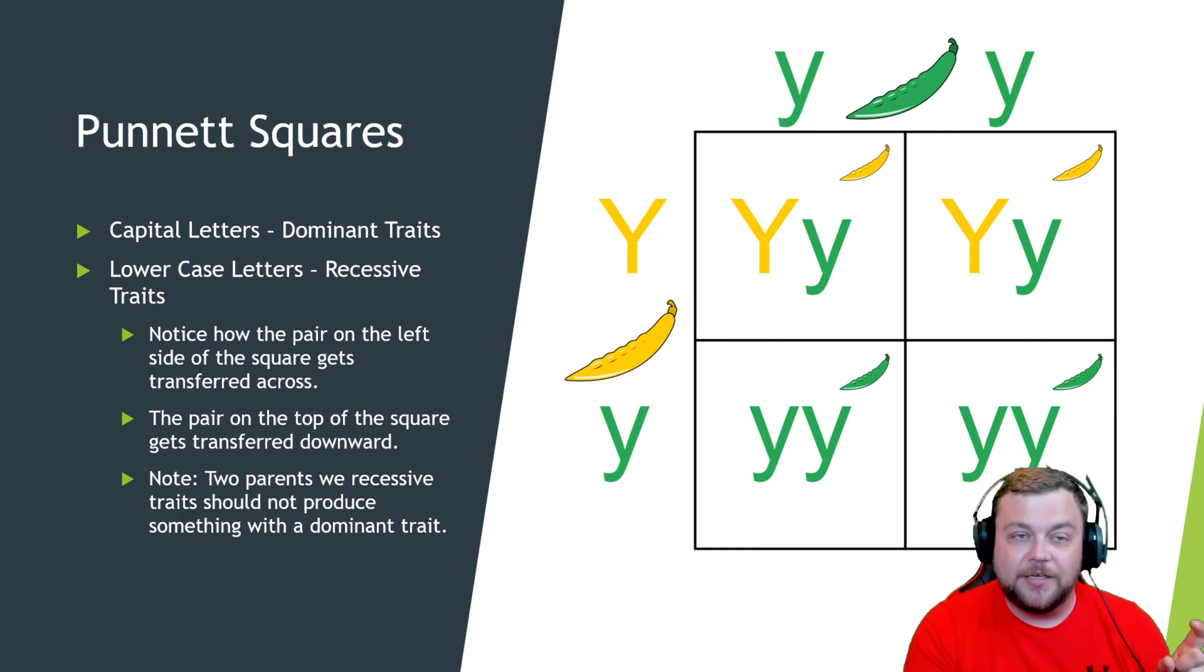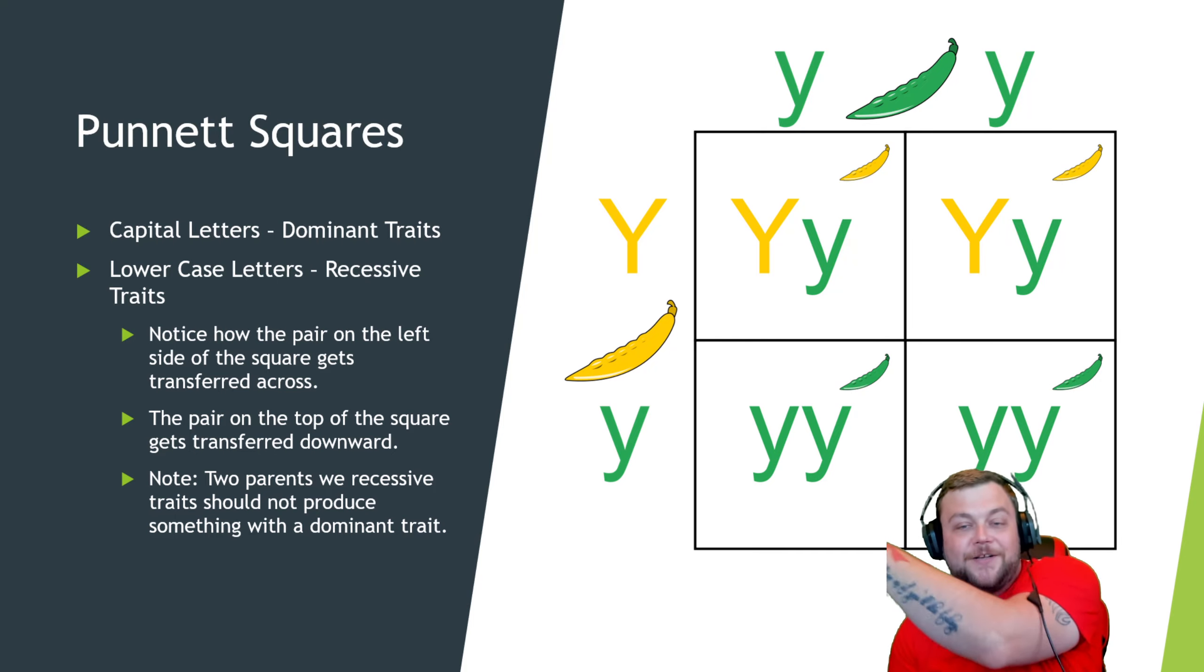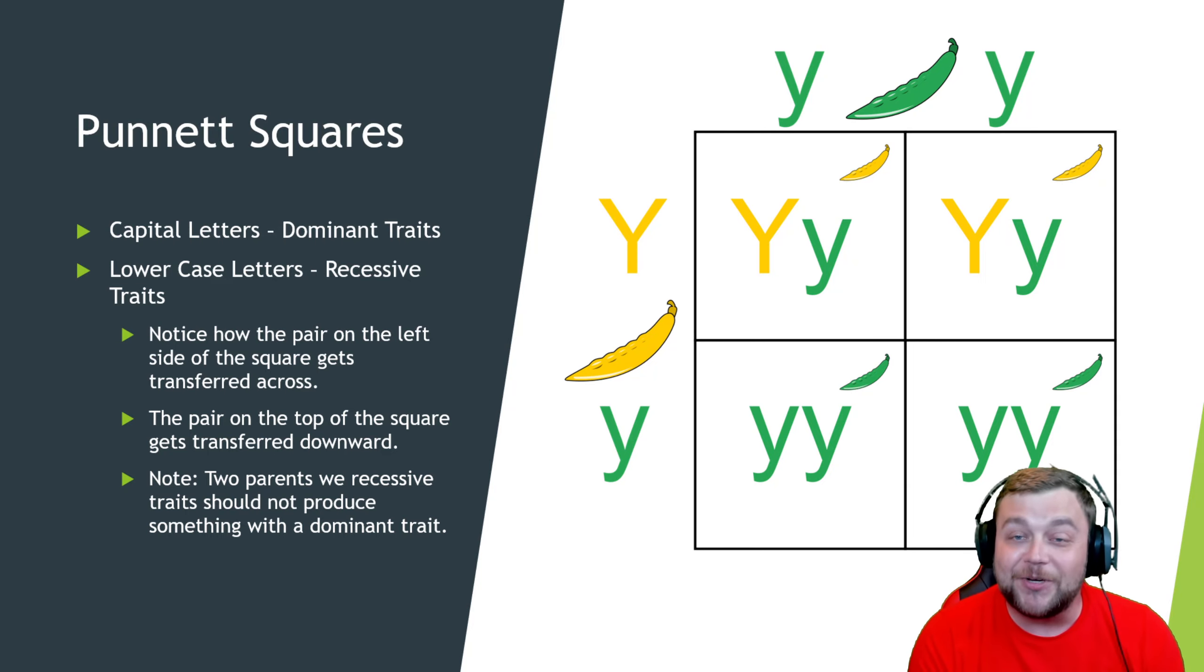From my past experience with teaching the GED, these Punnett squares show up all of the time. Almost guaranteed you're going to get a Punnett square, so it's good to study them. You have capital letters that represent your dominant traits and lowercase letters that represent recessive traits. Notice how the pair on the left side of the square gets transferred across. This Y moves from here over to here and here, so they're going across. Then the ones on the top are going down.